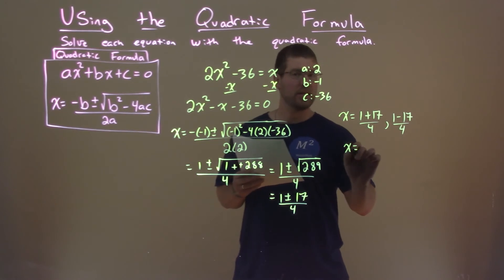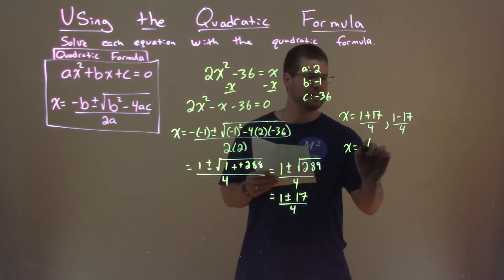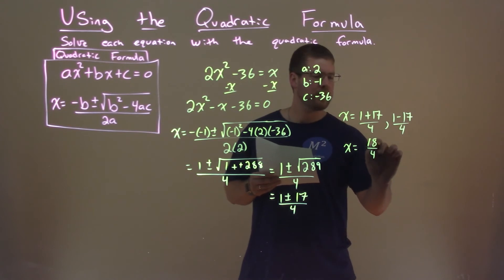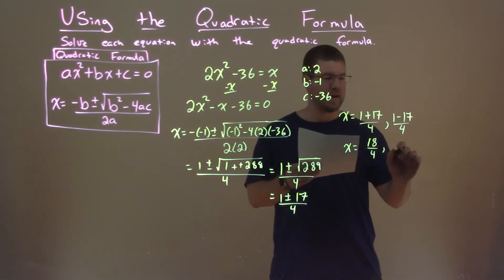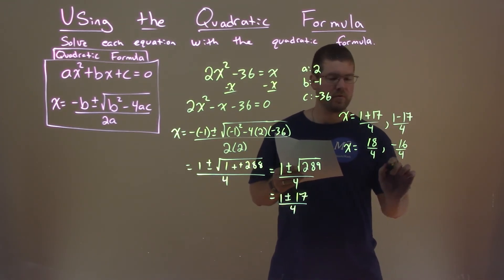And now we have to solve each one. So x equals, well, one plus 17 is 18 over four, and one minus 17 is a minus 16 over four.